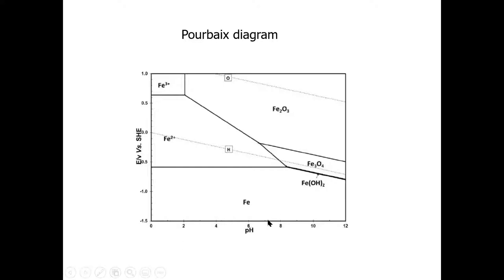Moving the cursor toward lower pH values goes into the acidic region — pH zero represents very strong acid, one molar acid. Moving in the other direction goes into the alkaline region, up to pH 12. From the agar gel experiment, you already know that cathodic parts of a steel sample have a high pH, and anodic parts have a lower pH. So different parts of a steel bolt in the agar gel can be expected to shift up or down in pH from the neutral starting point.